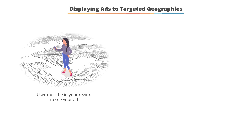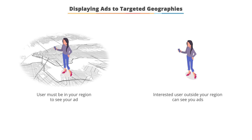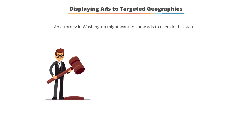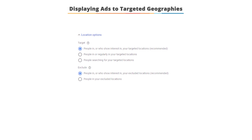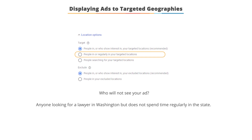In addition, you're going to decide if a user must be in your region to see your ad, or if you would like users who are outside of your target region but show an interest in that region to also see your ads. For example, if you're a lawyer and you're only licensed in a specific state, then you might only want to show ads to users in that state. Therefore, you can choose the option 'people in or regularly in your target locations,' and anyone searching for a lawyer in your state who does not regularly spend time there won't see your ad.